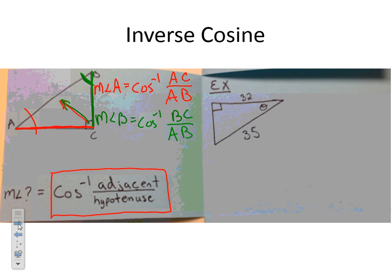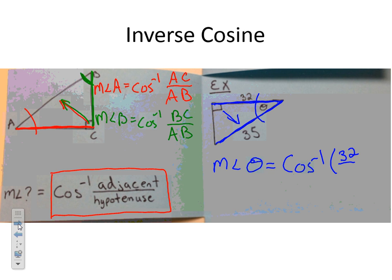For this example, if I want to find angle theta, the measure of angle theta equals — since I have the adjacent side it's touching and the hypotenuse — I'm going to do inverse cosine of 32 over 35. Typing this into my calculator, I get about 23.9. Rounding to the nearest whole degree, that's 24 degrees.